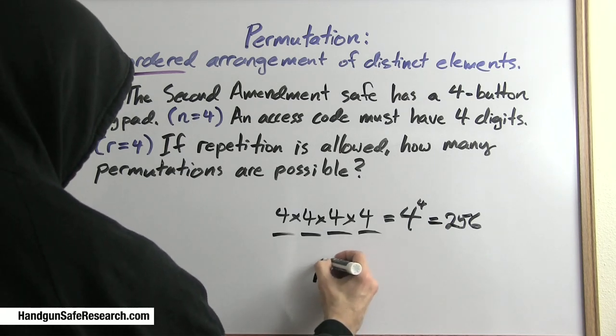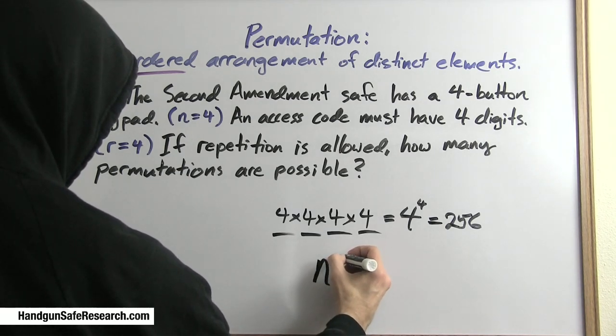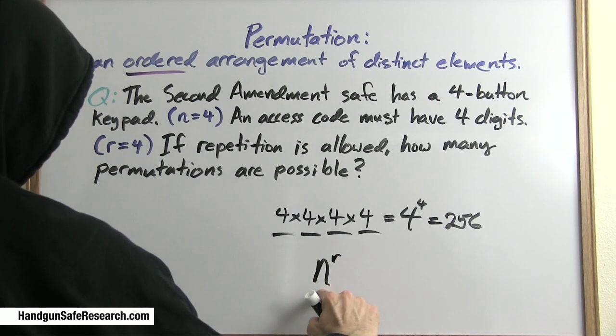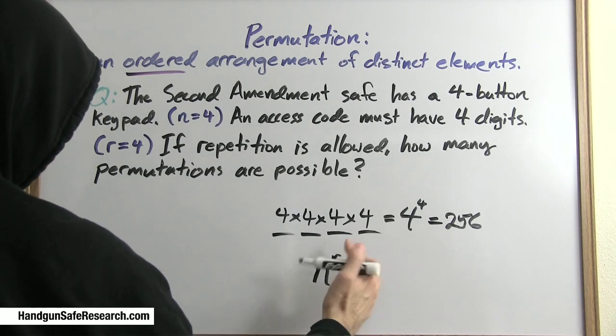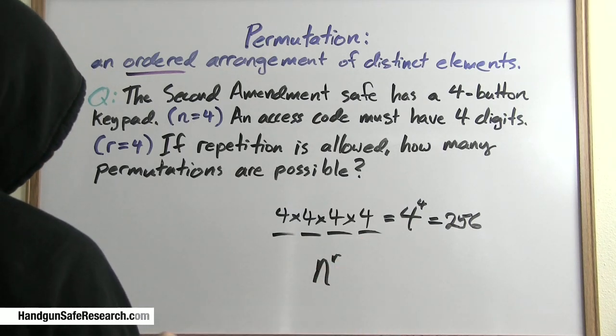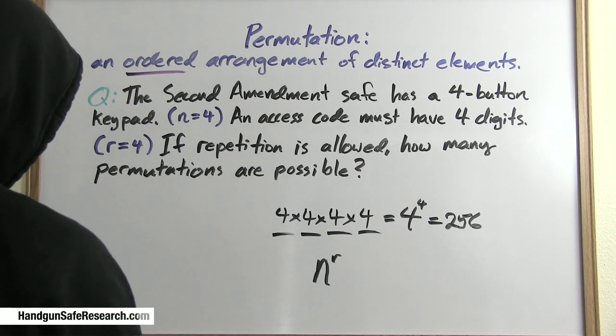The main thing here is that this formula, n to the r, where n is the set you're choosing from, r is the number you're selecting from that set. This is the simplest and most common calculation you come across looking at these electronic handgun safes.